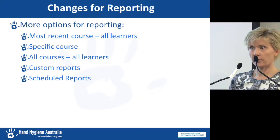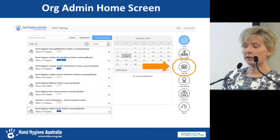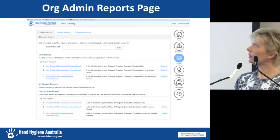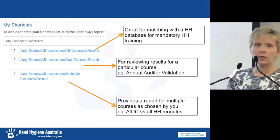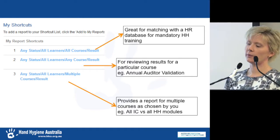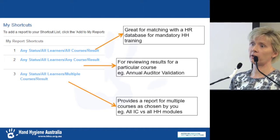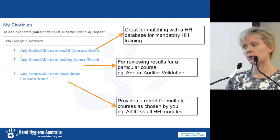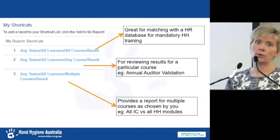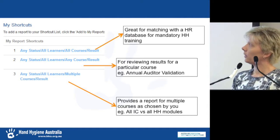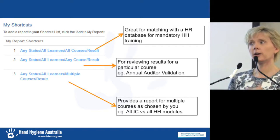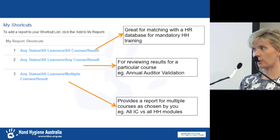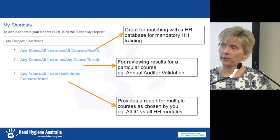When you log in as an organisation administrator, you get extra menu buttons — an organisation button and a reports button. The reports button provides three shortcut reports. The first is All Learners and All Courses, great for matching with an HR database for annual hand hygiene training. The second is All Learners for Any Course — pick a specific course, great for checking if auditors have done their annual validation module. The third is All Learners for Multiple Courses, useful for comparing hand hygiene versus infection control module completions.